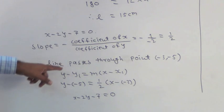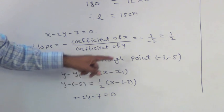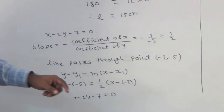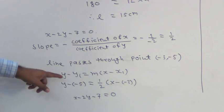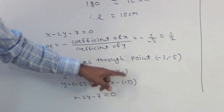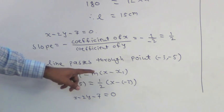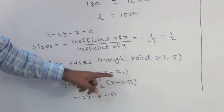So, equation of that line will be y minus y1 is equal to m in bracket x minus x1. After substituting the value we get y minus minus 5 is equal to one half in bracket x minus minus 3. So, after simplifying we get x minus 2y minus 7 is equal to 0.